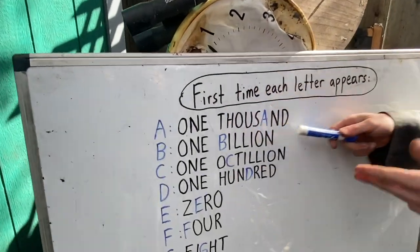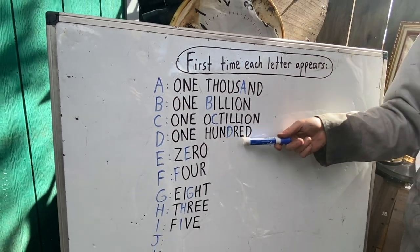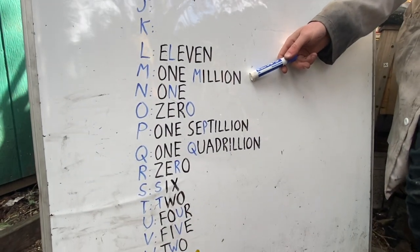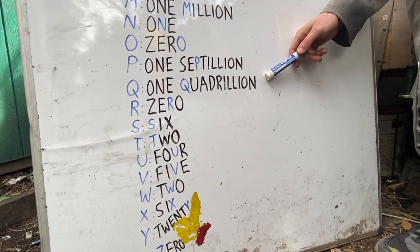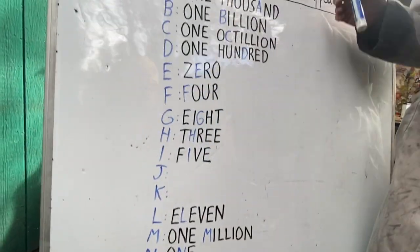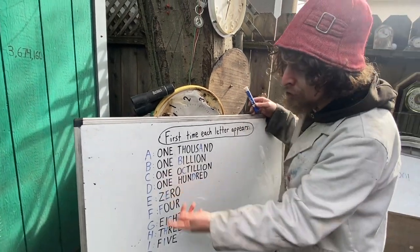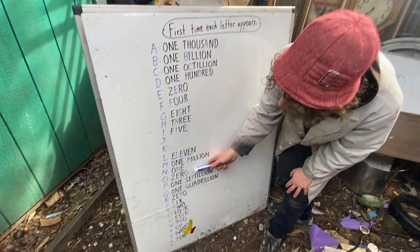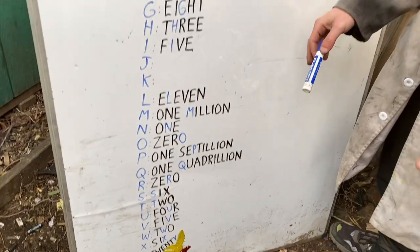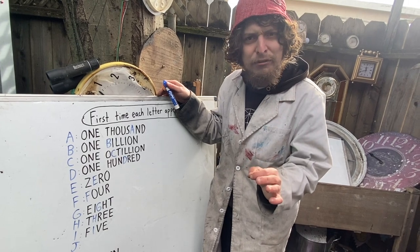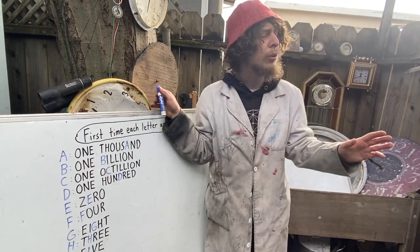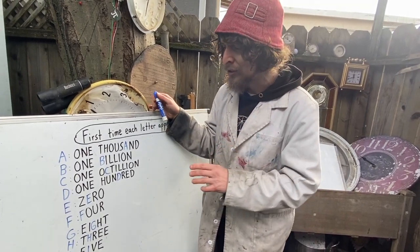Here is a list of the first number word that would contain each letter, starting from zero and going upward: A in 1,000; B in one billion; C in octillion; D at 100; M at one million; N and O much sooner; P and Q relatively late; and the rest pretty early. This is assuming our list started at zero. If it started at one, E would have shown up in 'one' instead. Z would never show up at all if we started from one — Z is in none of the spellings of numbers except 'zero.'